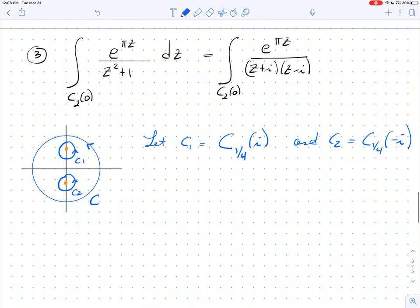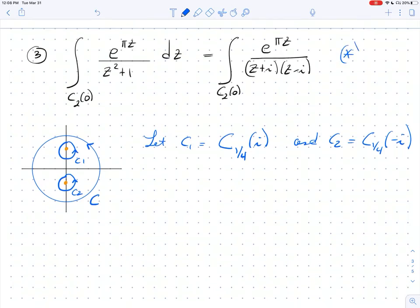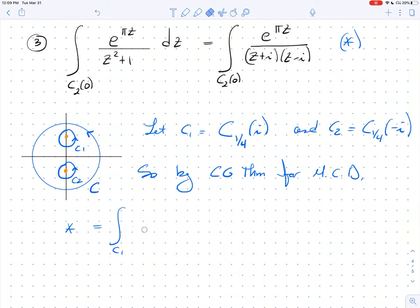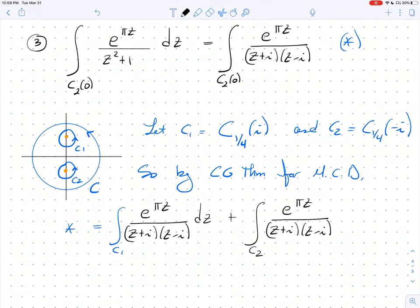And so now, if you think about it, if this is my big C, then this particular integral, let's call this star. So, we can say, so, by the Cauchy-Goursat theorem for multiply connected domains, my integral star is equal to the integral over C1 of, you know what, I don't want to call that thing f, I want to be safe. So, let's actually copy this so I can just paste it. So, it's the integral over C1 of that function, dz, plus the integral over C2 of this function, dz. That's a really nice trick.